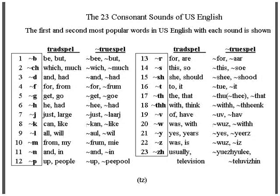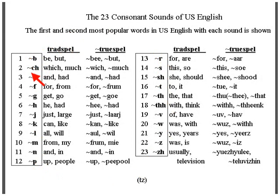This is an analysis of the 23 consonant sounds of U.S. English in true spell. A consonant is usually a brief sound, where a vowel is a long sound. There are two kinds of sounds in English: consonants and vowels. Here is the list of the 23 consonants as spelled in true spell. You can tell it's true spell because of the tilde in front of it, and they're listed alphabetically.